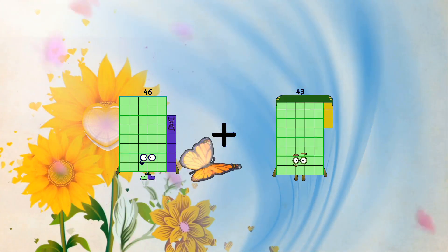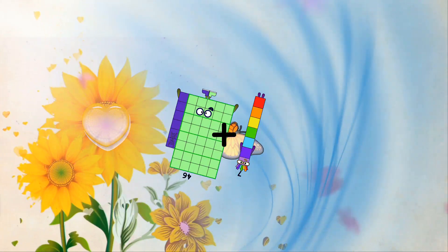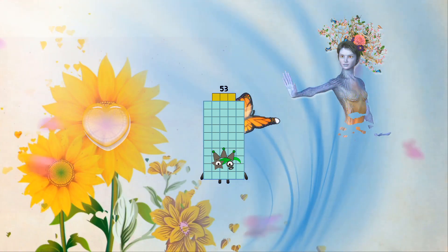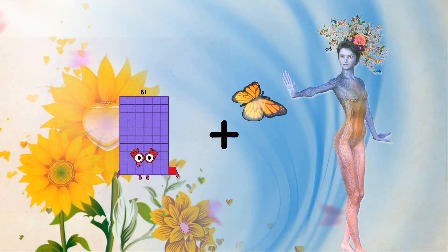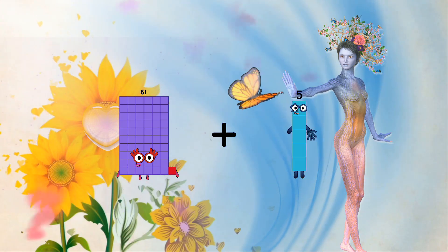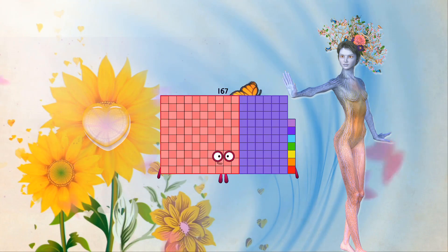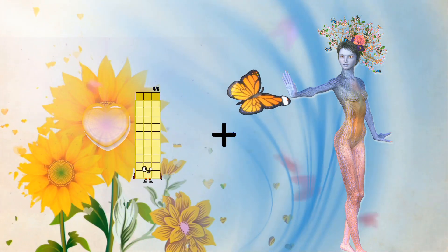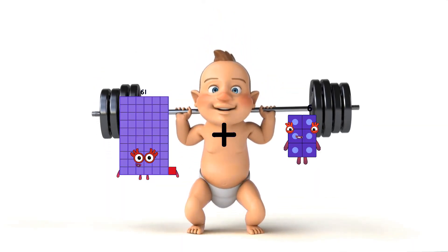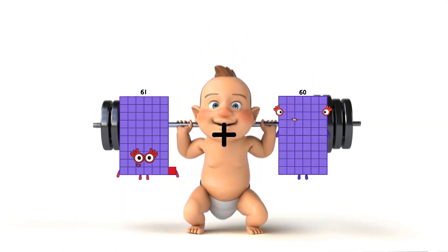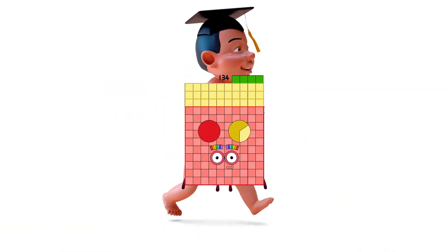46 plus 7 equals 53, 61 plus 106 equals 167, 61 plus 73 equals 134.